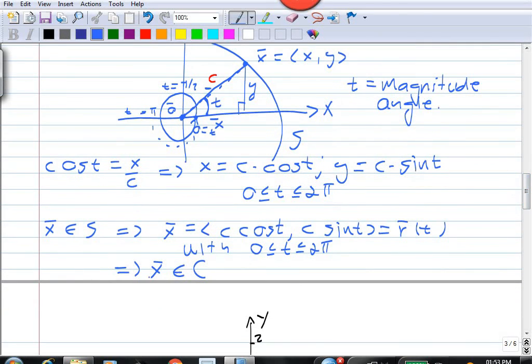So, what have we got? If x is an element of our curve C, then x is an element of our circle S. In other words,